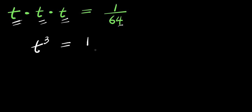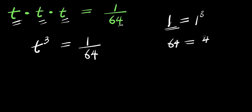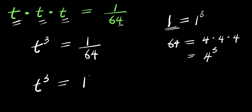And this equals 1 over 64. Now I can express 1 as 1 to the power of 3, because 1 to the power of 3 is the same thing as 1. I can also express 64 as 4 times 4 times 4, and this is 4 to the power of 3 — since 4 times 4 is 16 and 16 times 4 is 64. So I can rewrite the whole equation as t to the power of 3 equals 1 to the power of 3 divided by 4 to the power of 3.